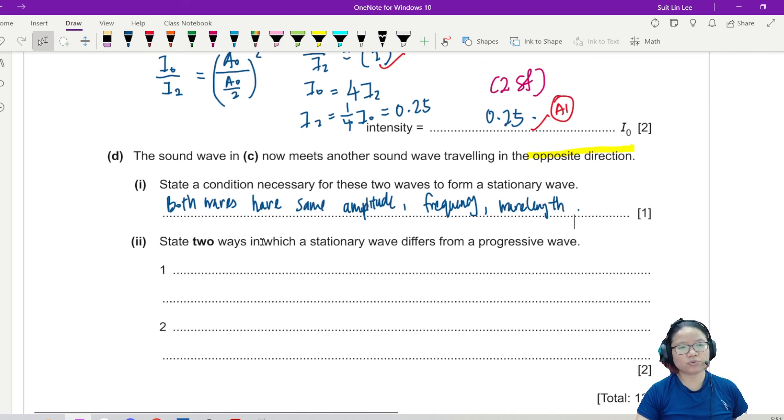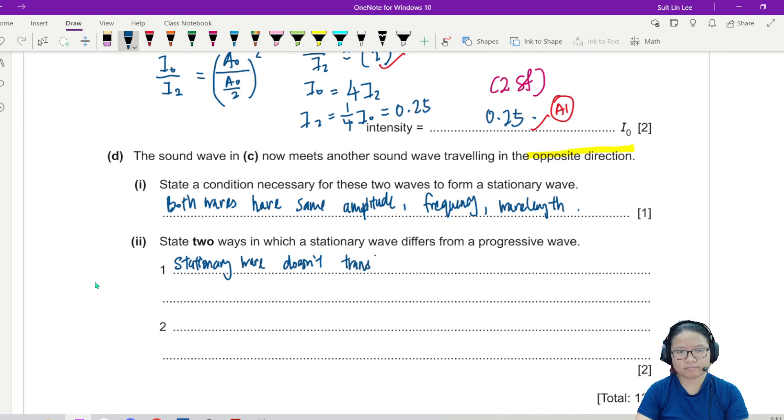Part two. State two ways in which a stationary wave differs from progressive wave. Well, the first one is one moves and one doesn't, right? So, this kind of list format question, by the way, in past years, you should only write two. If you write more than two, they will ignore everything else. So I'm going to try to write my points. I will say the stationary wave doesn't transfer energy, doesn't propagate energy, whereas the progressive wave transfers energy. The stationary wave, right, the energy is stuck between, stuck inside, stuck inside the wave. So progressive wave transfers energy.